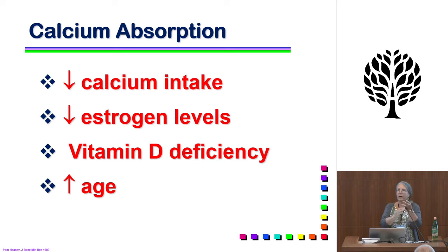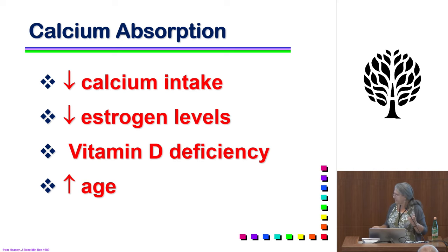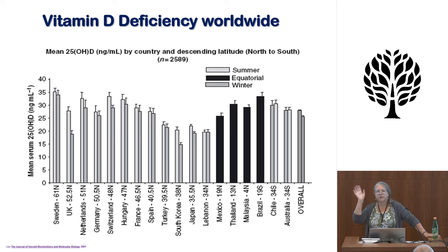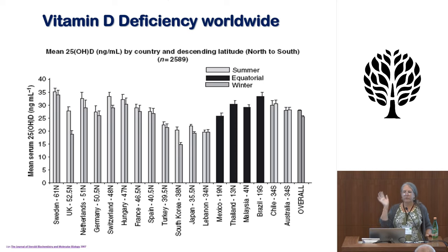When talking about calcium balance, we consider how much calcium you're eating daily, whether estrogen levels are normal or low due to menopause in women, vitamin D deficiency — which we're recognizing is more and more of a problem — and the fact that as you get older, everything gets worse. Vitamin D deficiency comes down to how much sun exposure you get and what foods you're eating. The closer you are to the equator, or the more summer sunshine you're exposed to, the more vitamin D you make.